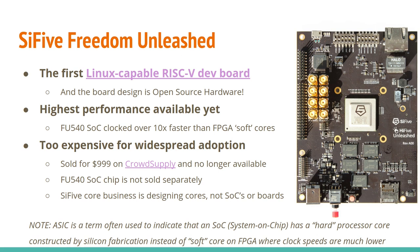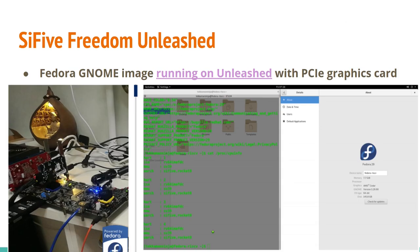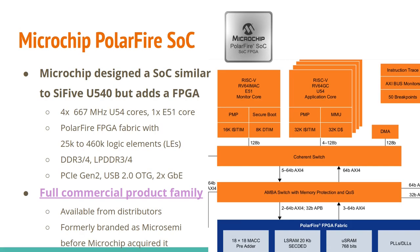A point of clarification: the term ASIC often refers to an SOC with a hard processor core constructed with traditional silicon fabrication, as opposed to a soft core on an FPGA which runs at significantly slower clock speeds. If you have the necessary hardware — though it's rare and expensive — you can boot the Fedora GNOME image on the Unleashed board with an expansion board and graphics card and get a full Linux graphical desktop on RISC-V. The key is we now know it works, and as hardware becomes more available this kind of functionality will be within reach.